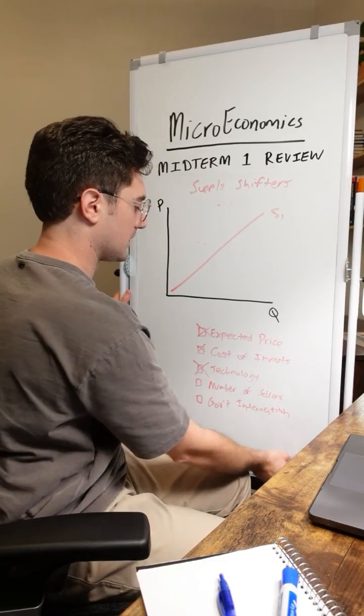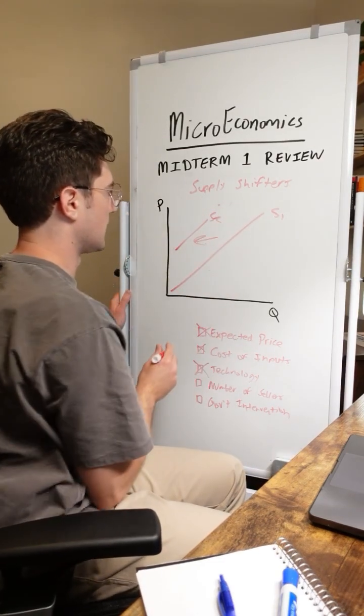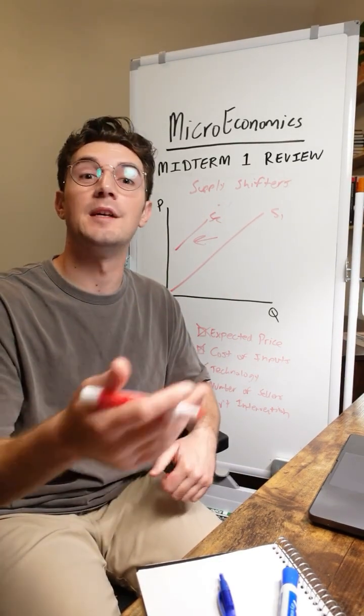And on the flip side, if sellers leave the market, well then we'll shift supply to the left. Inverse reason here. If there's now less people selling the good.